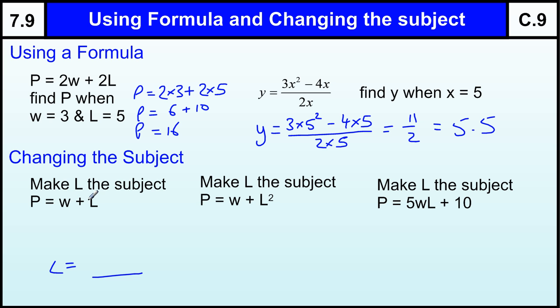So W is a number. I want to get to the other side, I just take it away. Because it's plus W here. So if I take away W from both sides, I've got P minus W equals L. So L equals P minus W. It's just written the other way around.